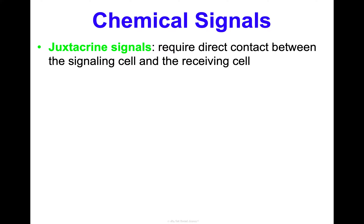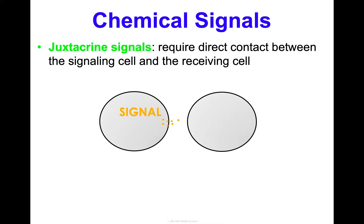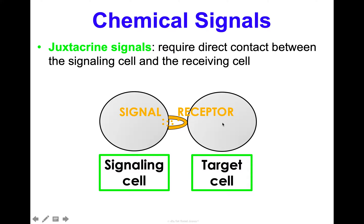Another type of chemical signal is juxtacrine signals. These require direct contact between the signaling cell and the receiving cell. The signaling cell has the signal right there and it has to be touching — there has to be some sort of physical connection with the receiving cell so that it can receive the signal. This is how some growth factors work that are critical for developing cardiac and neural functions, and also how many unicellular organisms like bacteria communicate — direct contact between two bacteria to pass a signal.